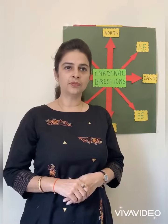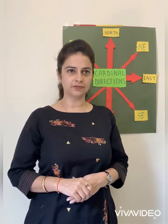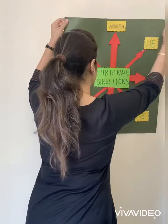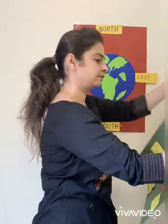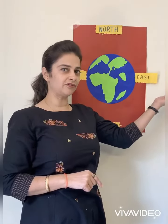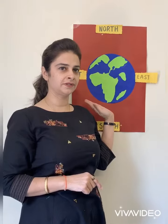Now, I would like you all to do an activity. Draw a picture of your house on a piece of paper. Find out and draw things which are to the north of your house, south of your house, something to the east of your house, and something to the west of your house.